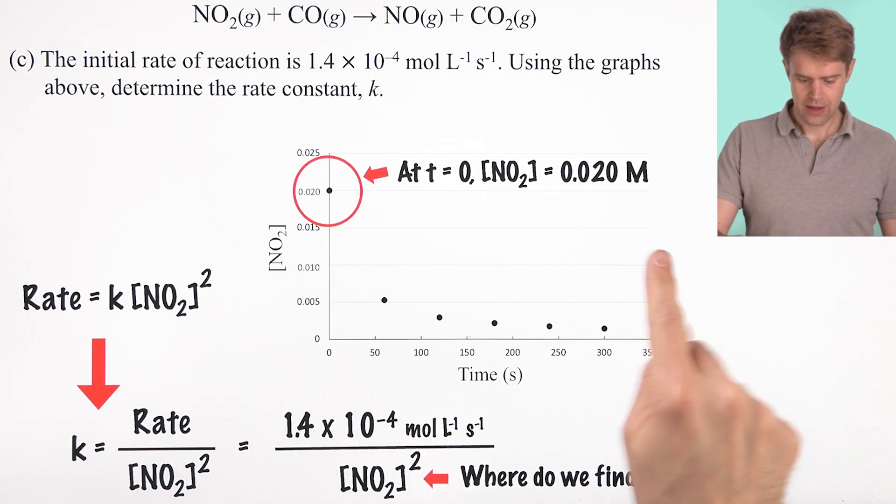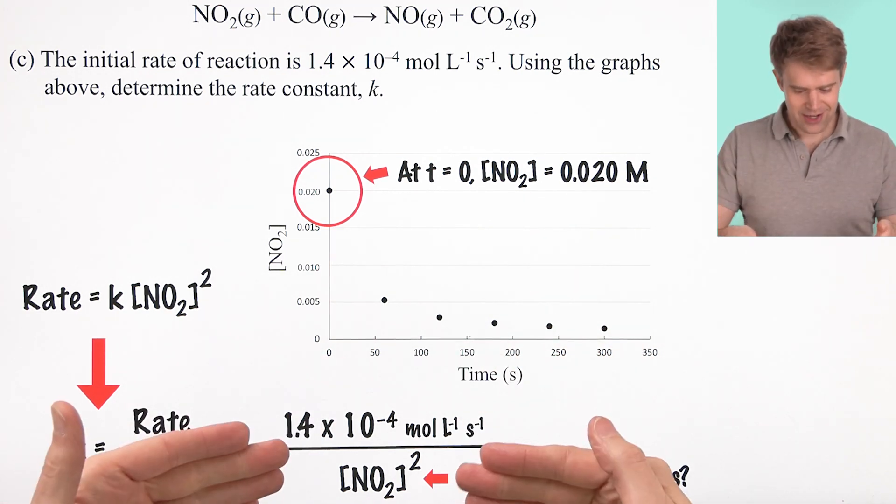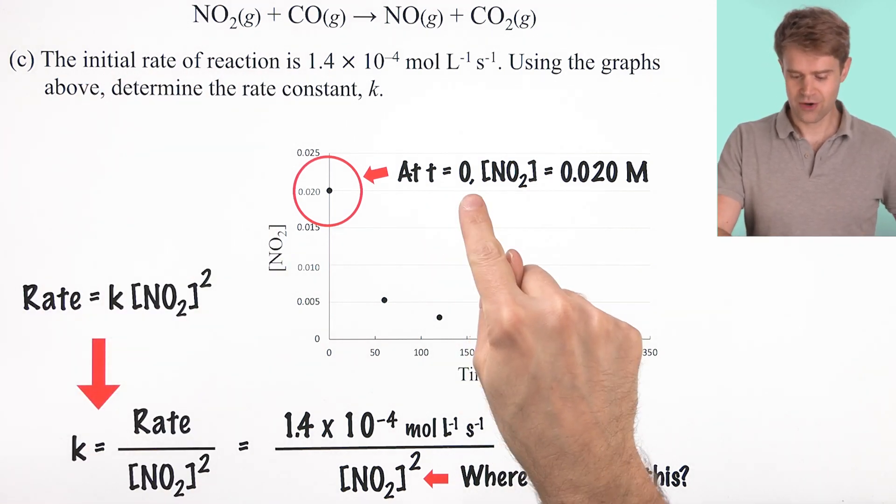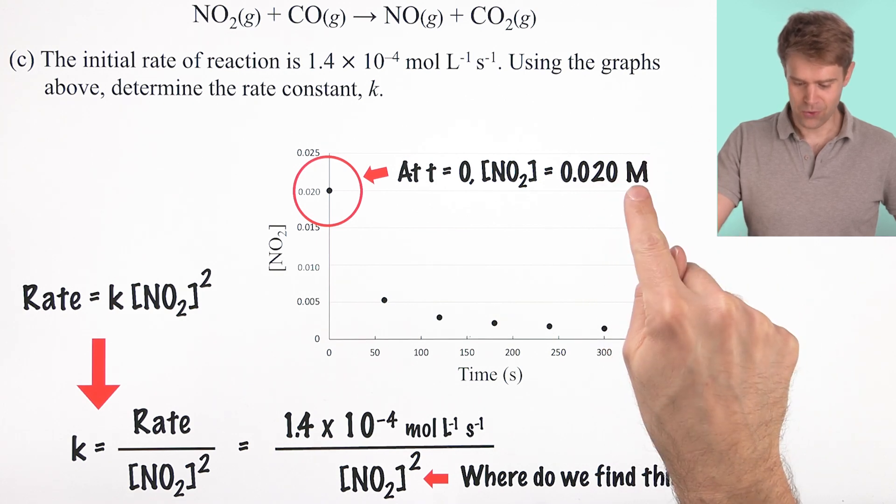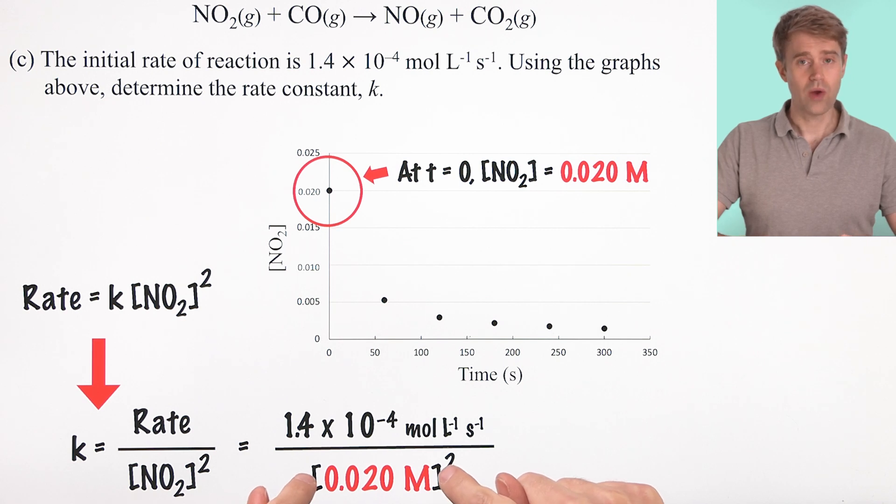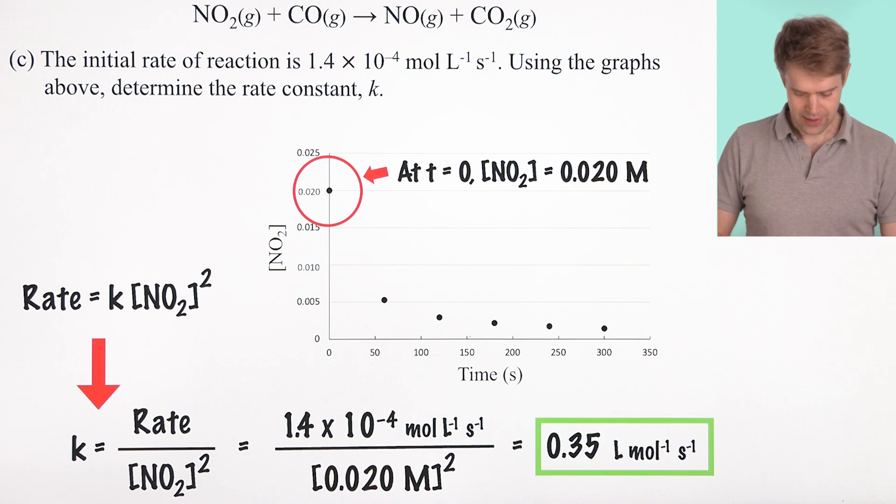So why not use this one right here? For this one, the y-axis is simply the concentration of NO2. So it's going to be the easiest to read and to work with, with no extra math required. We can zoom in here, and we'll see that when time equals zero, initial starting concentration to match the initial rate, T equals zero, NO2 equals 0.020 molar.